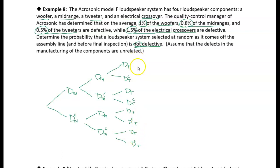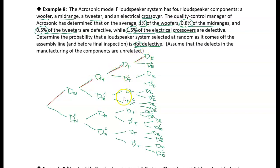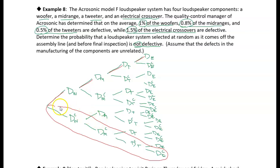We also have to add another layer because we have to select the electronic crossover. I've drawn in all the possibilities for defective electronic crossovers. You can see there are a lot of different outcomes depending on whether any given component is defective or not. Tracing the first path gives us a defective woofer, defective mid-range, defective tweeter, and defective electronic crossover — not good. But all paths have at least one defective part except the last one. That last branch is the one we're interested in: no defective woofer, no defective mid-range, no defective tweeter, no defective electronic crossover.